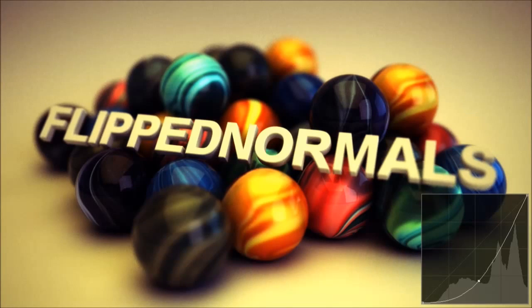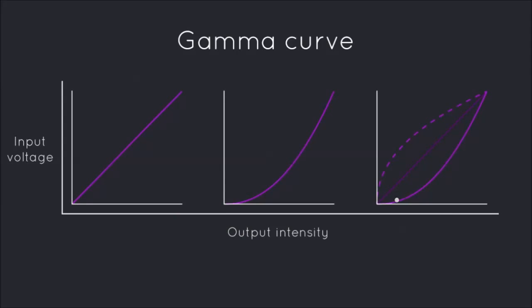And this is where the term gamma correction comes in. If we look at our third curve, you can see the dotted line is the inverse curve of our power curve, and the inverse curve of that has a gamma of 2.2, while our other curve has a gamma value of 0.4545. And all this is to make our images look normal — that's really all the technical stuff that we need to know.